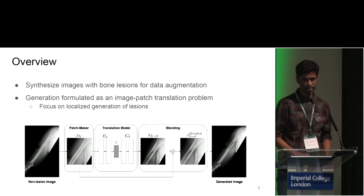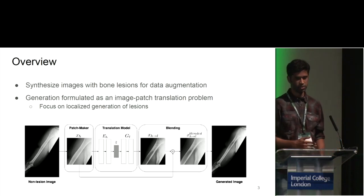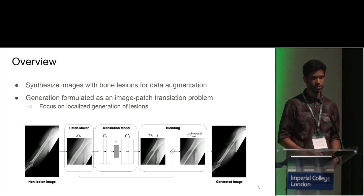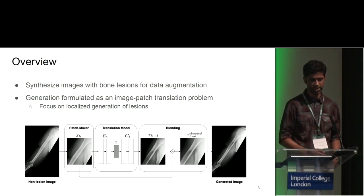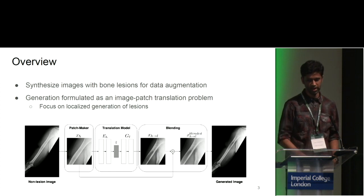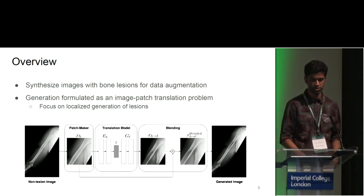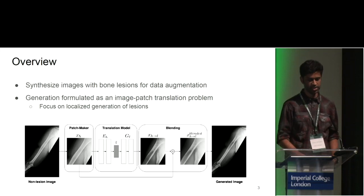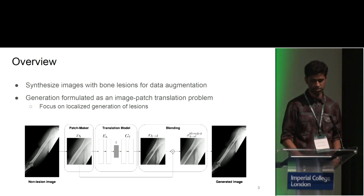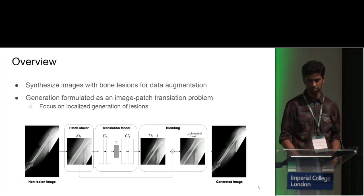Our solution is to augment our training dataset with synthetically generated bone lesion images. What we realized was that bone lesions are a very local phenomenon, and hence it helps to work with local image patches as opposed to the entire image for synthesis of bone lesions. Here is an illustration of our pipeline of bone lesion synthesis and data augmentation.